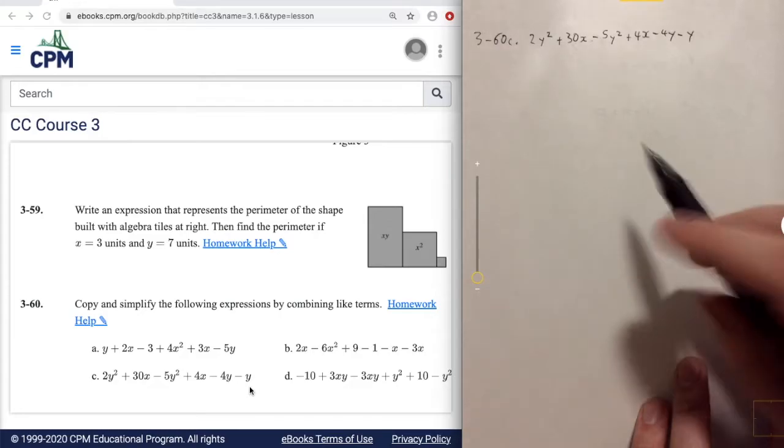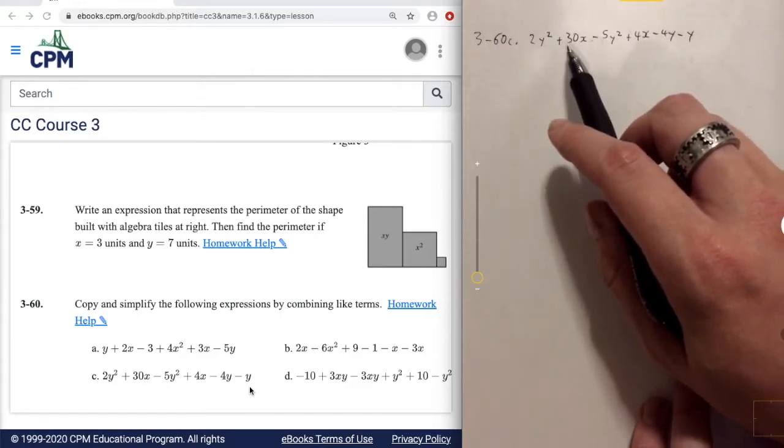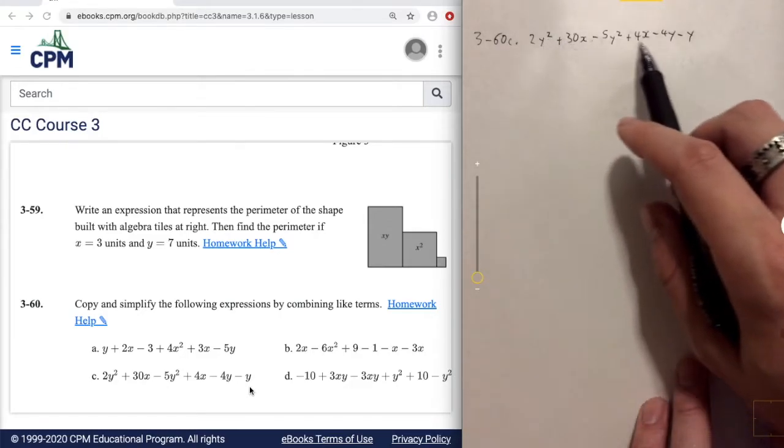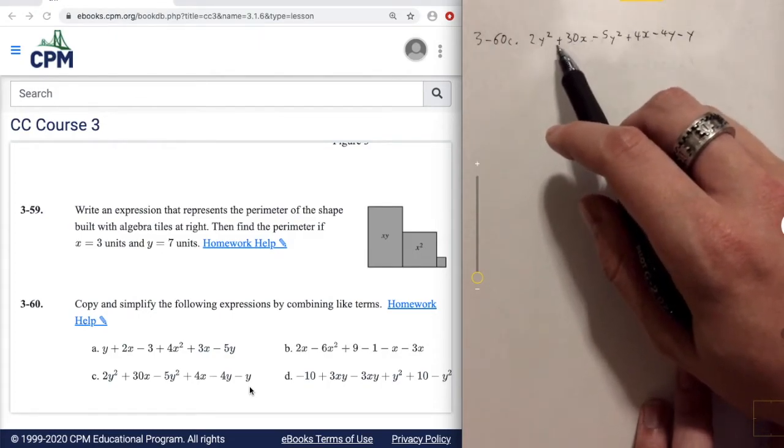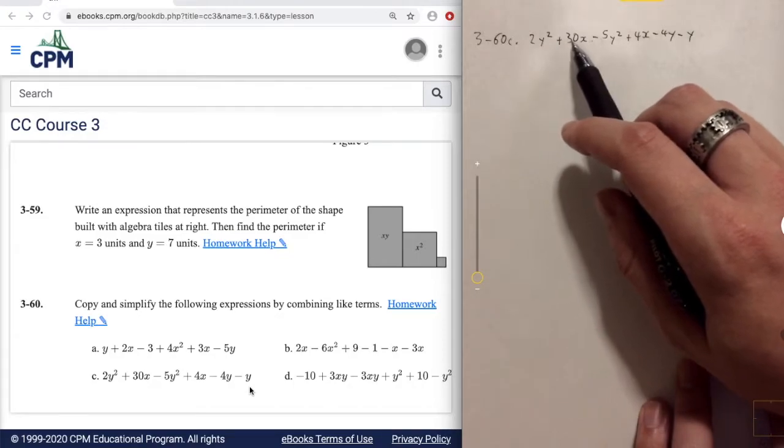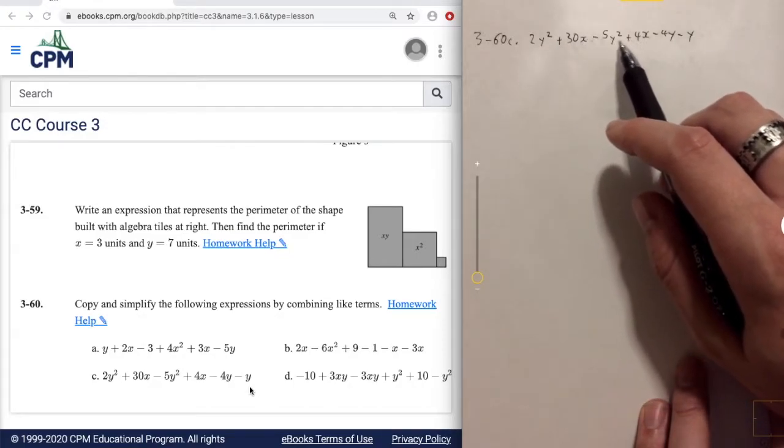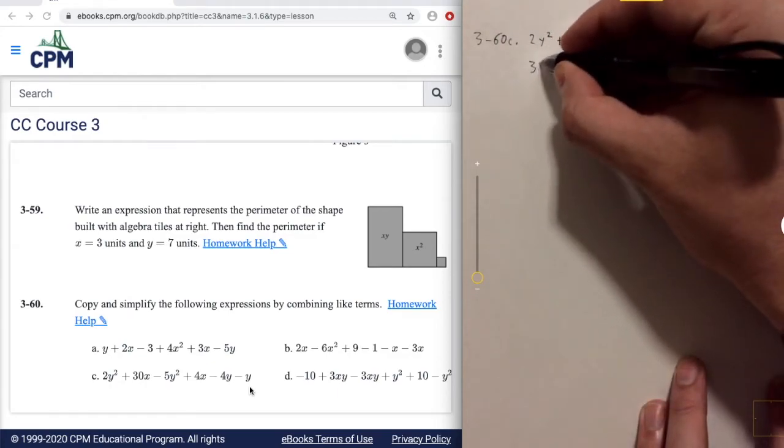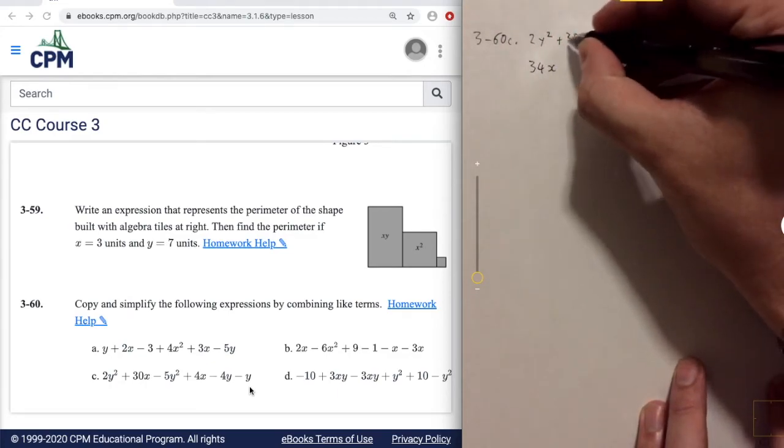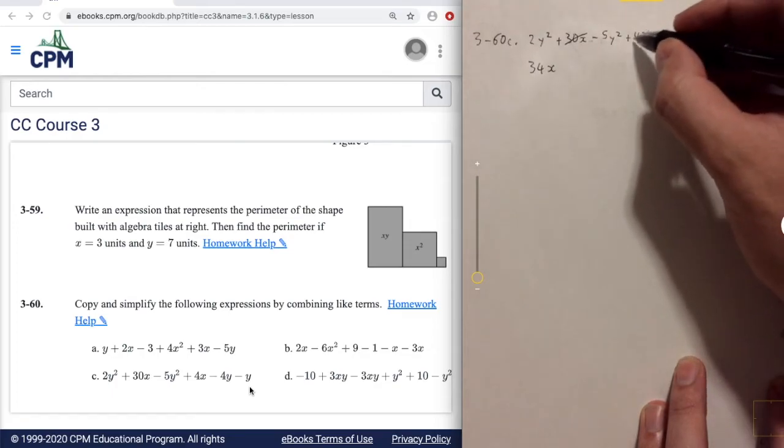So let's see, we start with any x squared. We don't have any x squared, so let's see how many x's we have. We have 30x here and 4 more x here. So we can grab those and get 34x, cross those out.